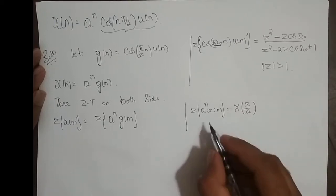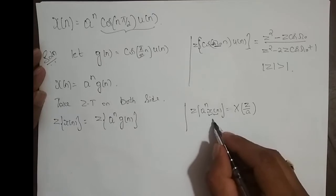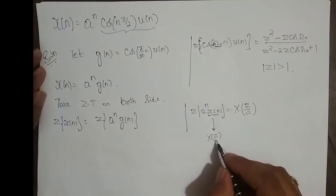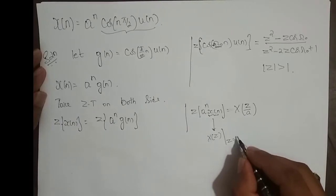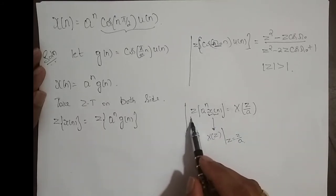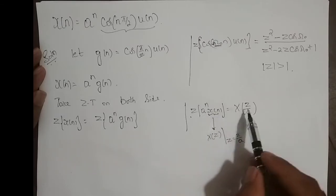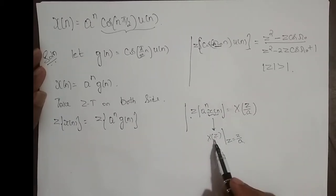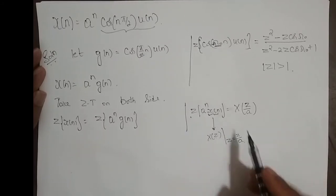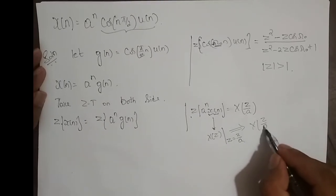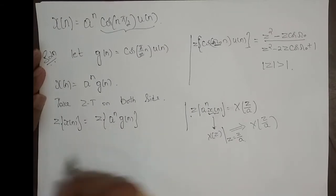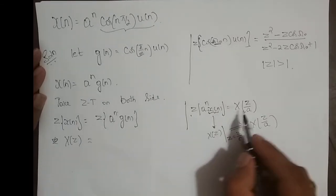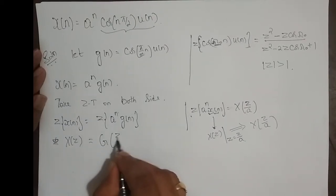What do we mean by this? We have a sequence x(n) and take its Z-transform to get X(z). In that X(z), wherever z appears, I replace it by z/a, which gives X(z/a). So Z{aⁿ g(n)} = G(z/a). To find G(z/a), I take the Z-transform of g(n) = cos(π/2 · n) u(n) to get G(z), then replace every z with z/a. The Z-transform of g(n) uses the formula with ω₀ = π/2, and ROC: |z| > 1.